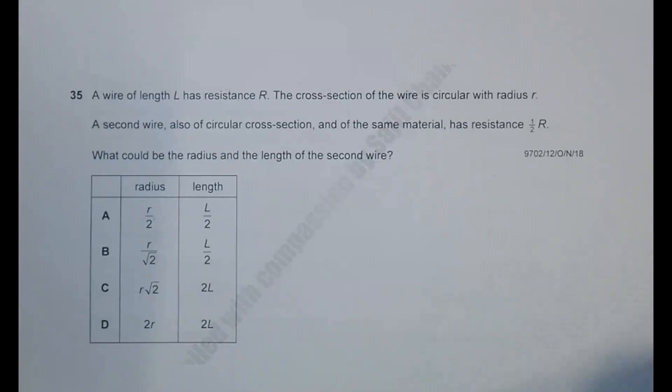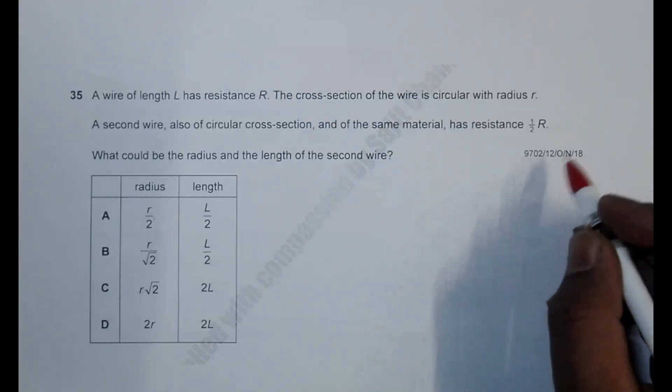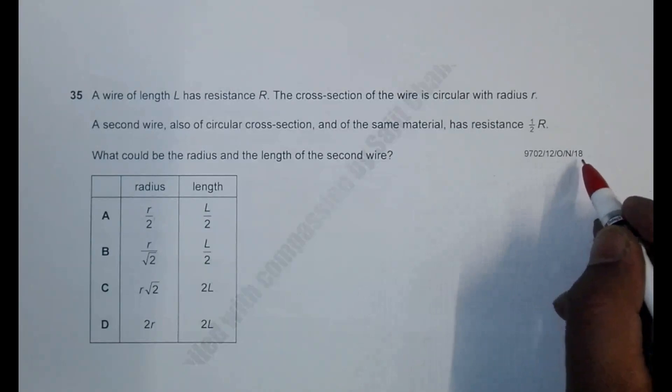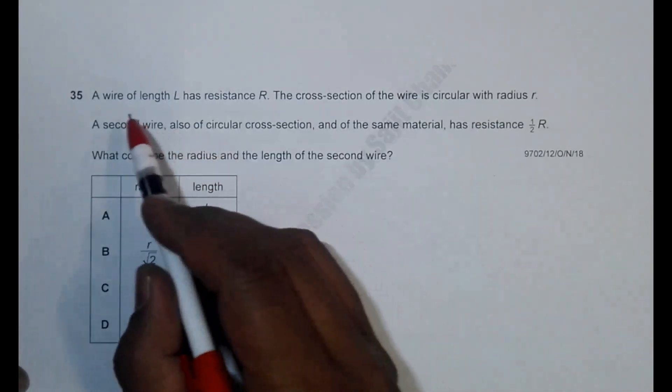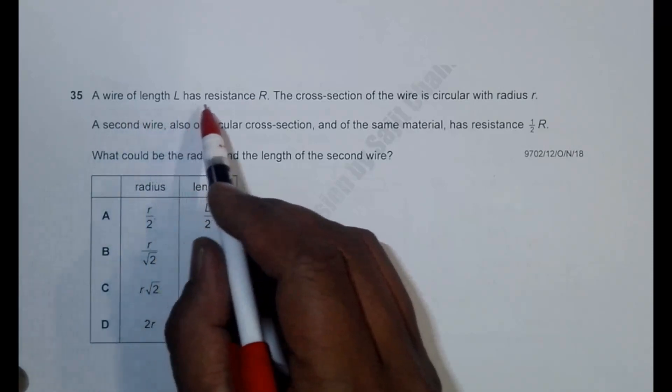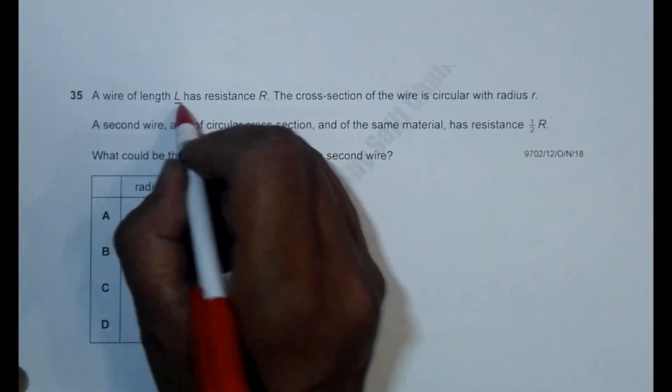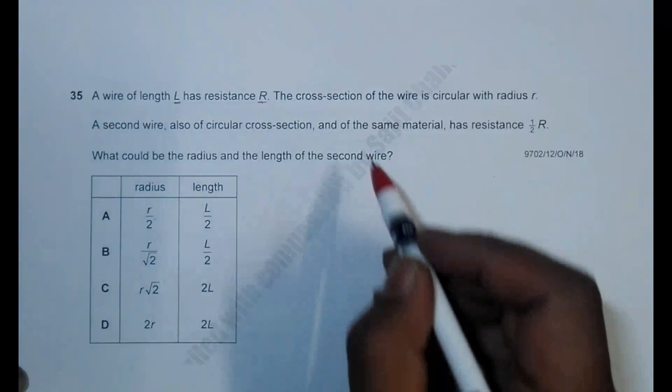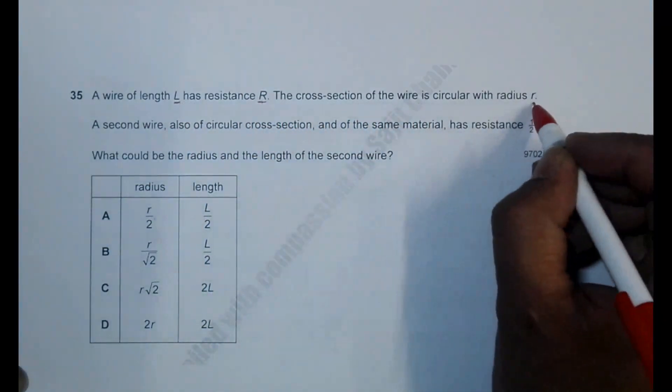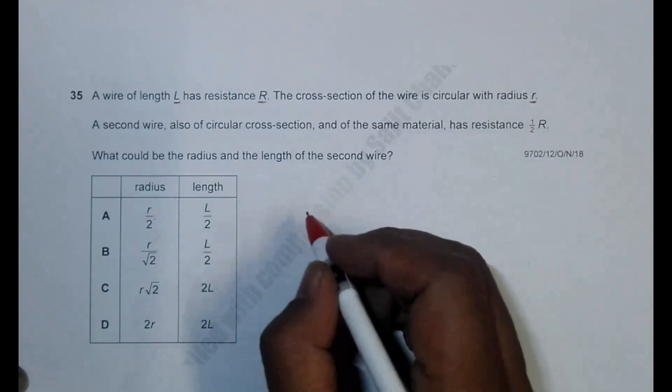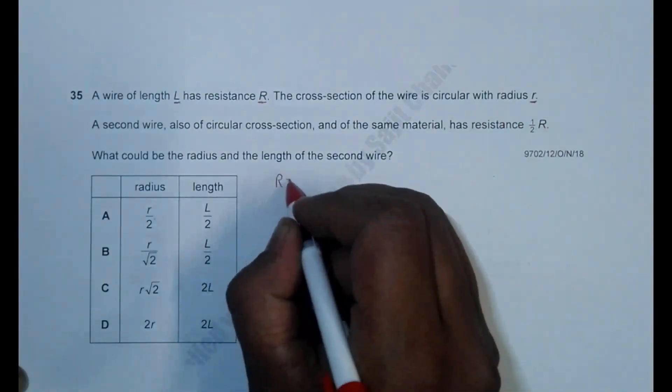Hello folks, the question for today is from Paper 1, October November 2018, question number 35. It says that a wire of length L has resistance R, and the cross-section of the wire is circular with radius small r. So that means R equals ρL by A.